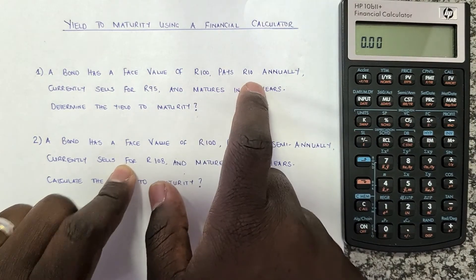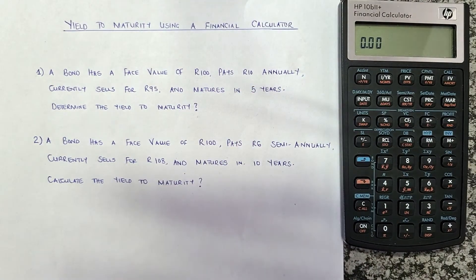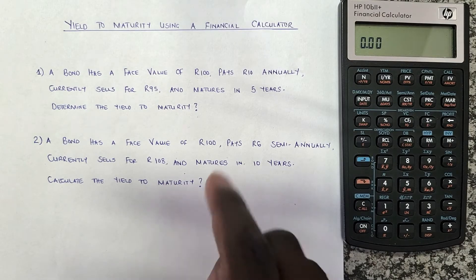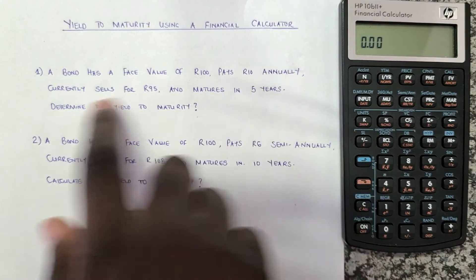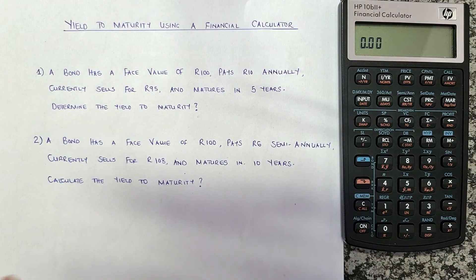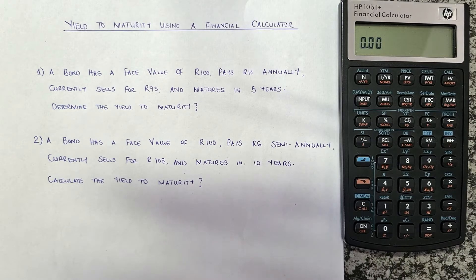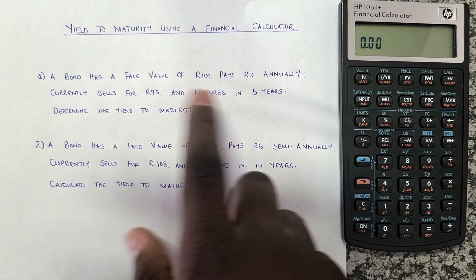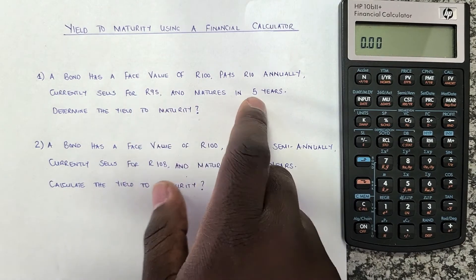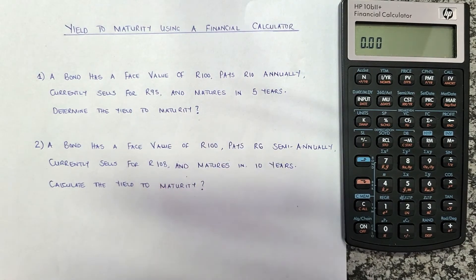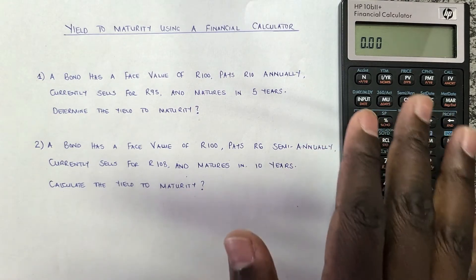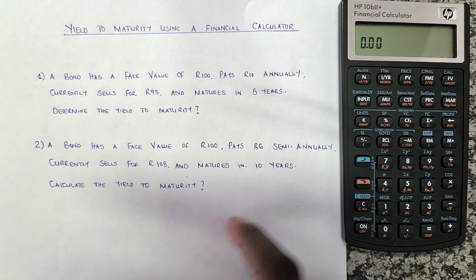It pays 10 rand annually — that is the coupon, how much the bondholder is going to receive annually, so we know this is the payment. It currently sells for 95 rand, meaning the bondholder has to pay 95 rand today; that is the market value of the bond and therefore our present value. It matures in five years, so that is our number of years.